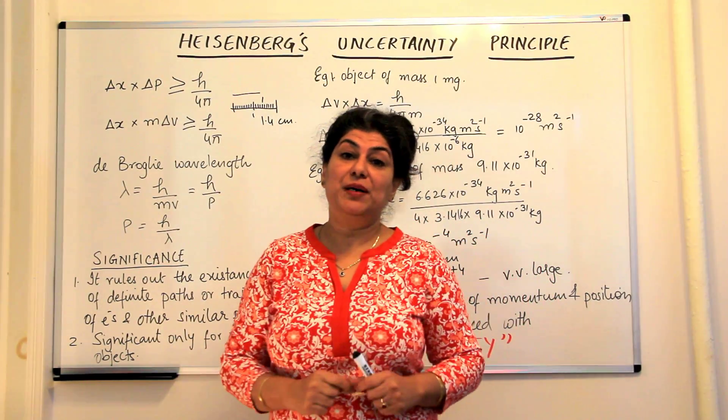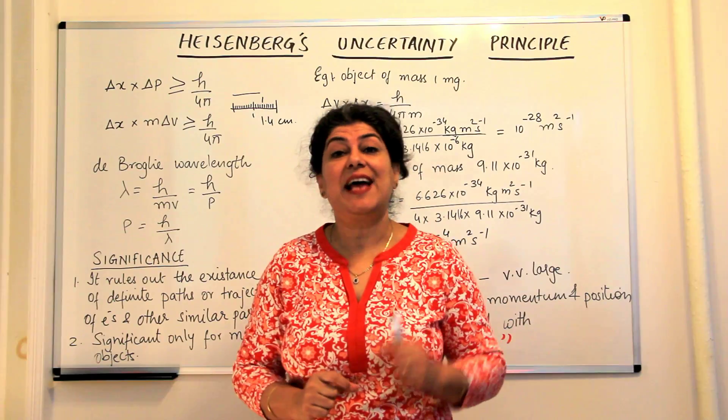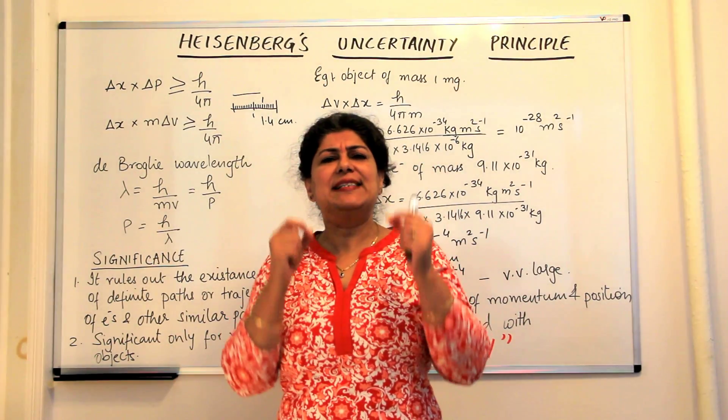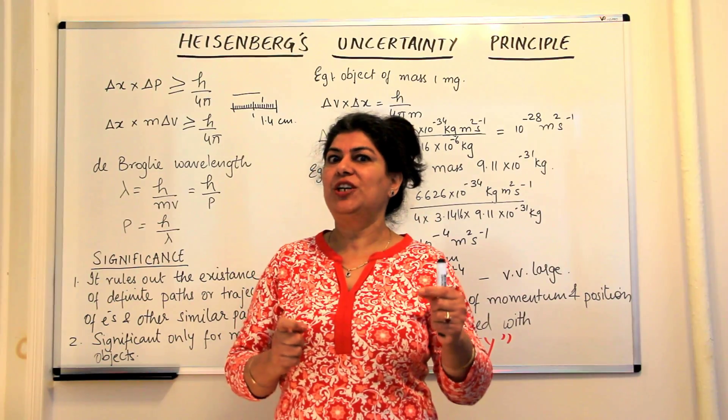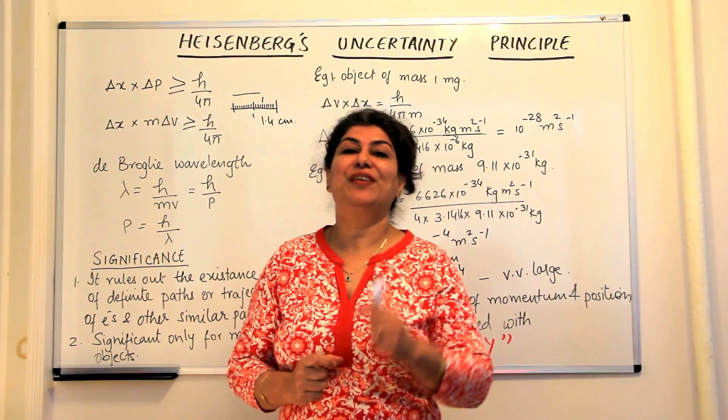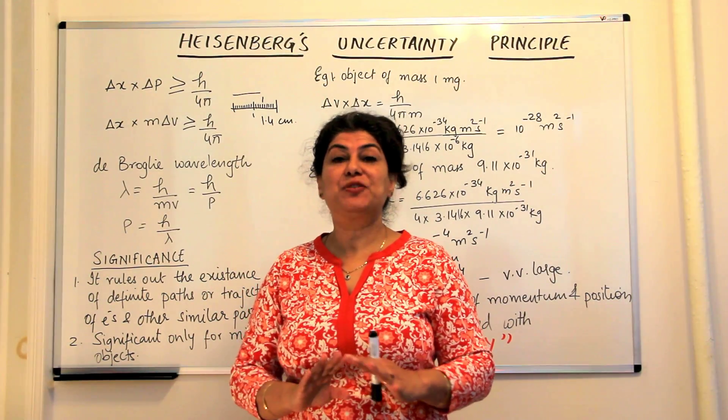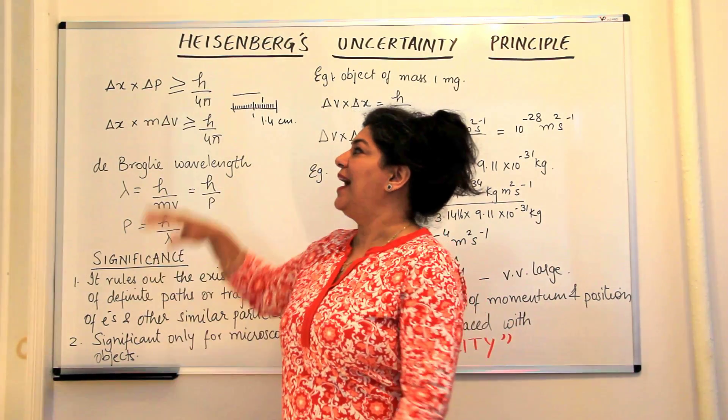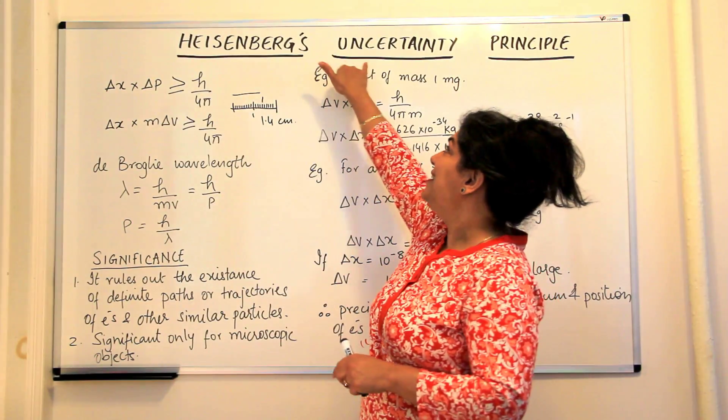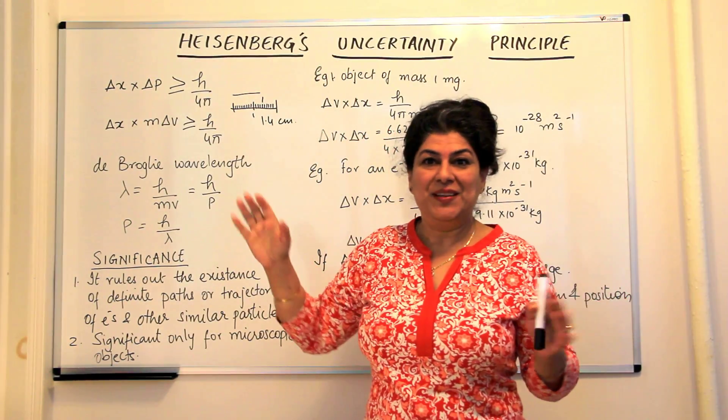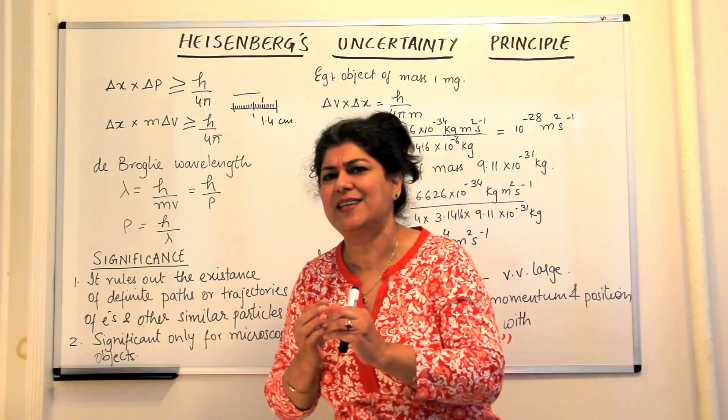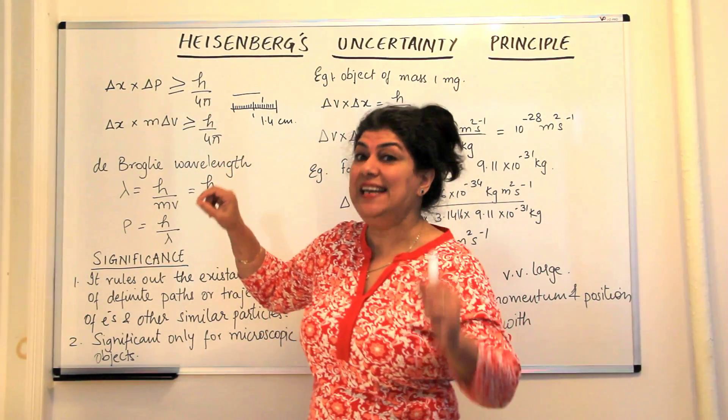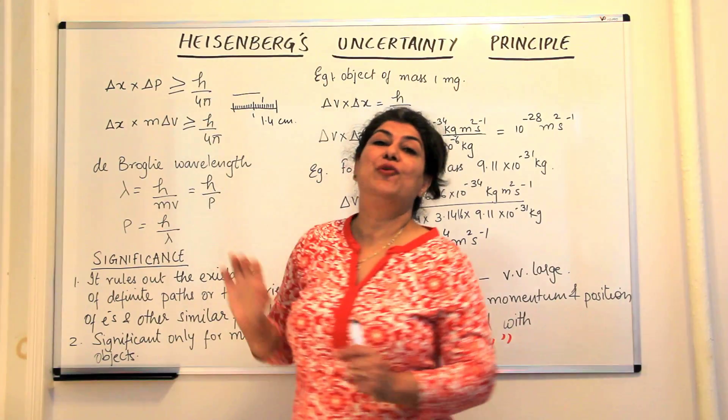This led Heisenberg to realize that it is actually impossible to find out exactly both the position and momentum of an electron. It's absolutely impossible to find out both simultaneously. And this was known as Heisenberg's Uncertainty Principle. There is some amount of uncertainty in the measurement, and this uncertainty is at least h over 4π.